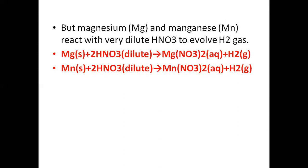But Magnesium (Mg) and Manganese (Mn) react with very dilute HNO3 to evolve Hydrogen gas, because in the reactivity series, Magnesium and Manganese are above Hydrogen. So they replace Hydrogen: Mg(NO3)2 and Hydrogen gas is formed, and Mn(NO3)2 and Hydrogen gas is formed.